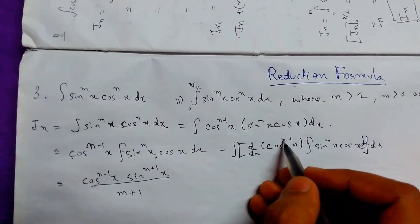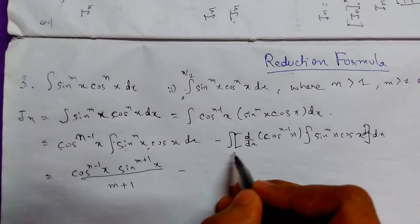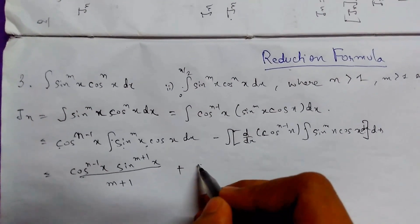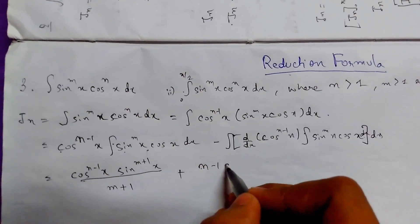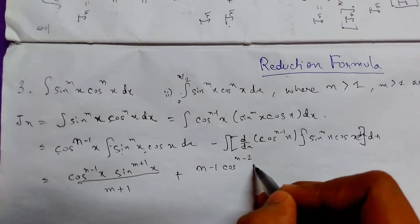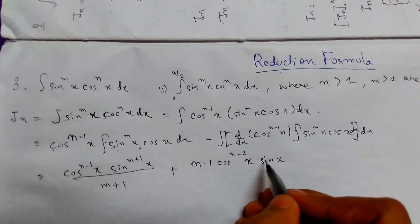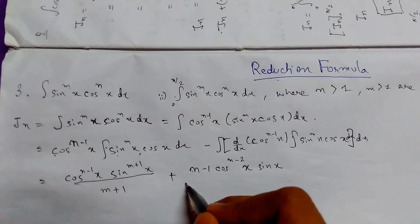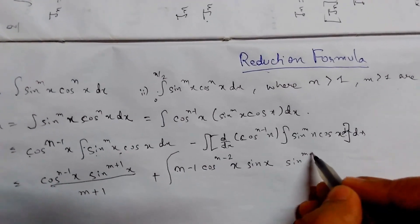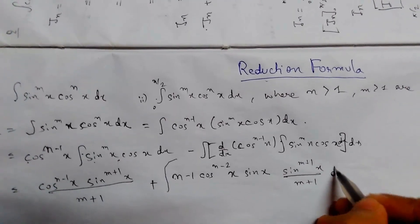Now we will differentiate. This will be minus, then plus (n-1) cos^(n-2)(x). The derivative of cos(x) is minus sin(x), and the minus will make it plus. The integration we have already done gives sin^(m+1)(x) upon m+1. So as a whole, this becomes the complete expression with dx.